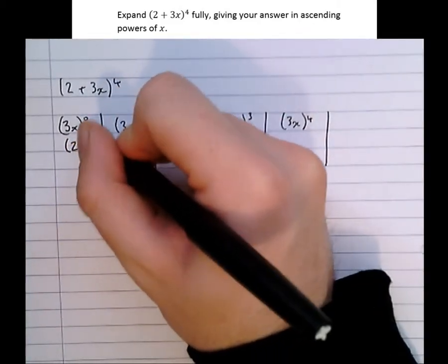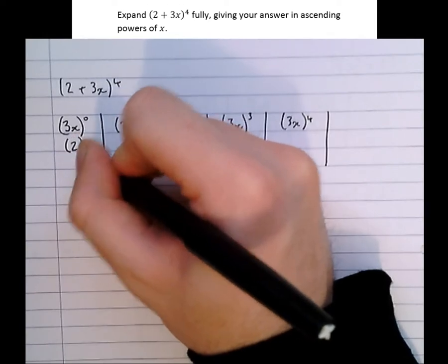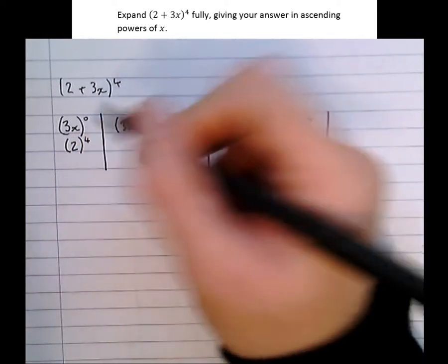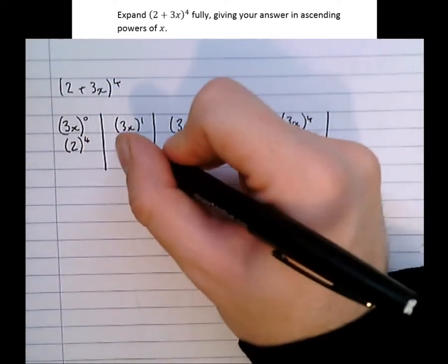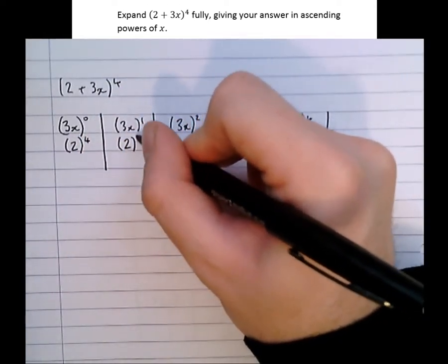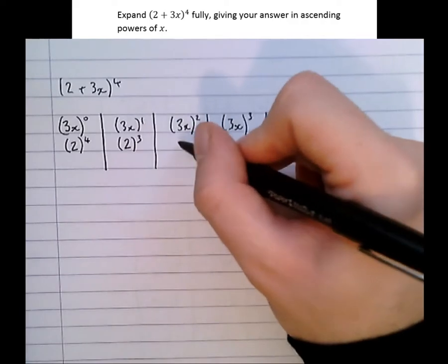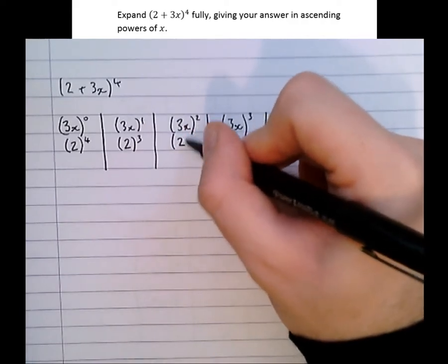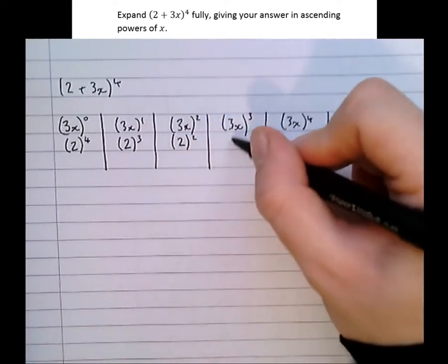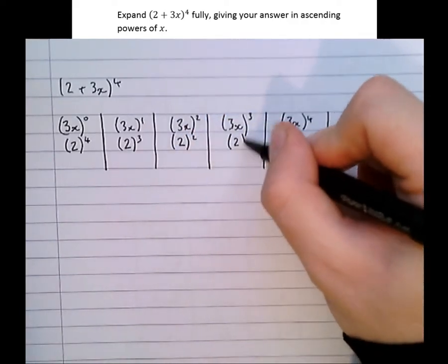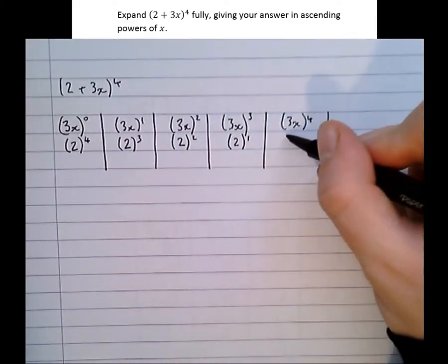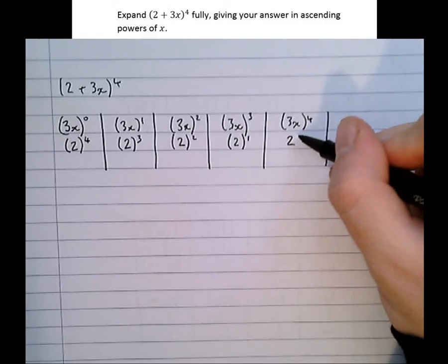The lowest power of x leads to the highest power of 2. So going across: 2 to the 4, 2 cubed, 2 squared, 2 to the 1, and 2 to the power of 0.